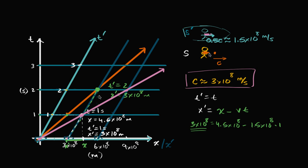The photon that I emit from my flashlight right at time equals zero — I'm going to see that as moving at the speed of light in the positive x direction. But my friend, since she's already moving in that positive x direction at half the speed of light, if we assumed a Newtonian world, she would see that photon going at half the speed of light. And if she emitted a photon from her flashlight, to her it would look like it's going at the speed of light, but to me it would look like it's going faster than the speed of light.